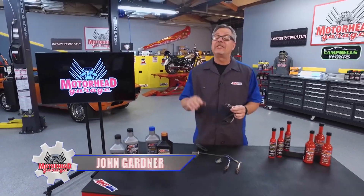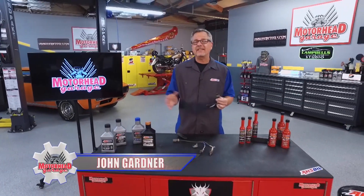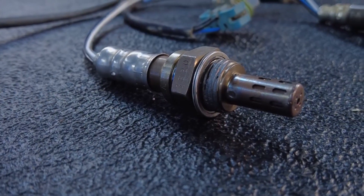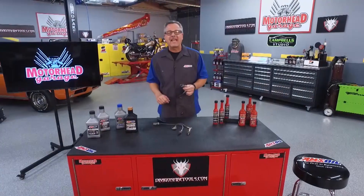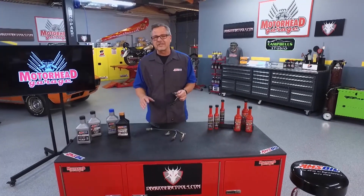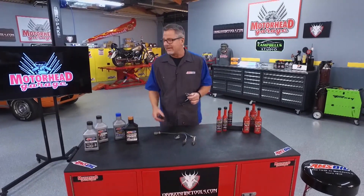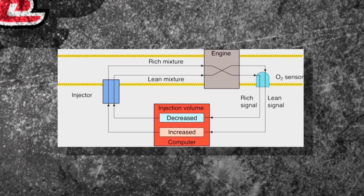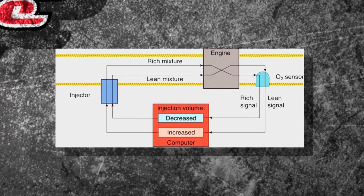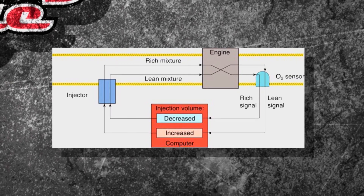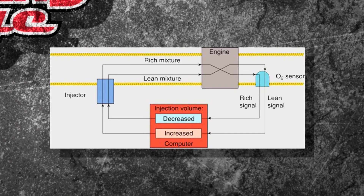CCC — Command Corrects Condition — that's how your car's fuel injection system works, and the oxygen sensor has the final say. Welcome to this AMSOIL tech tip; it's all about the oxygen sensor. The CCC concept means the oxygen sensor is monitoring what's going on in the exhaust.